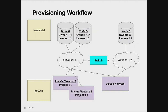Once the nodes are leased, the lessee can move into the provisioning workflow. Lessee L1 can use the two nodes they've leased, nodes B and D, in conjunction with the public network and the two private networks that they've created. They can perform a variety of actions: provision a node, attach networks to their nodes, and network actions will be reflected on the switch. Lessee L2 can do similar things, but they're limited to node C and the public network.